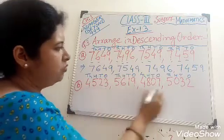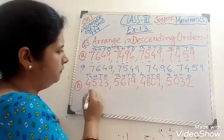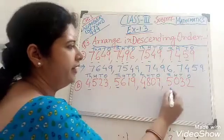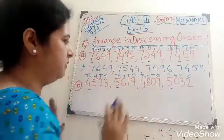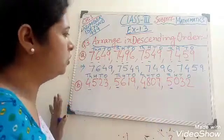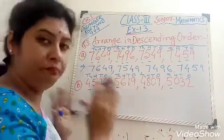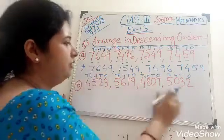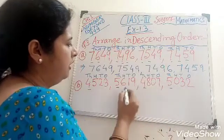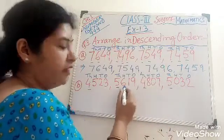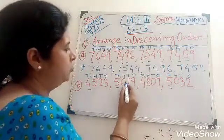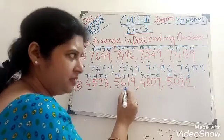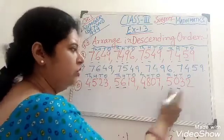In the thousand place: it is 4, it is 5, it is 4, it is 5. Same numbers in pairs. So first of all we pick up the bigger number. In these two numbers we check the hundred place: in this number it is 6 and it is 0.